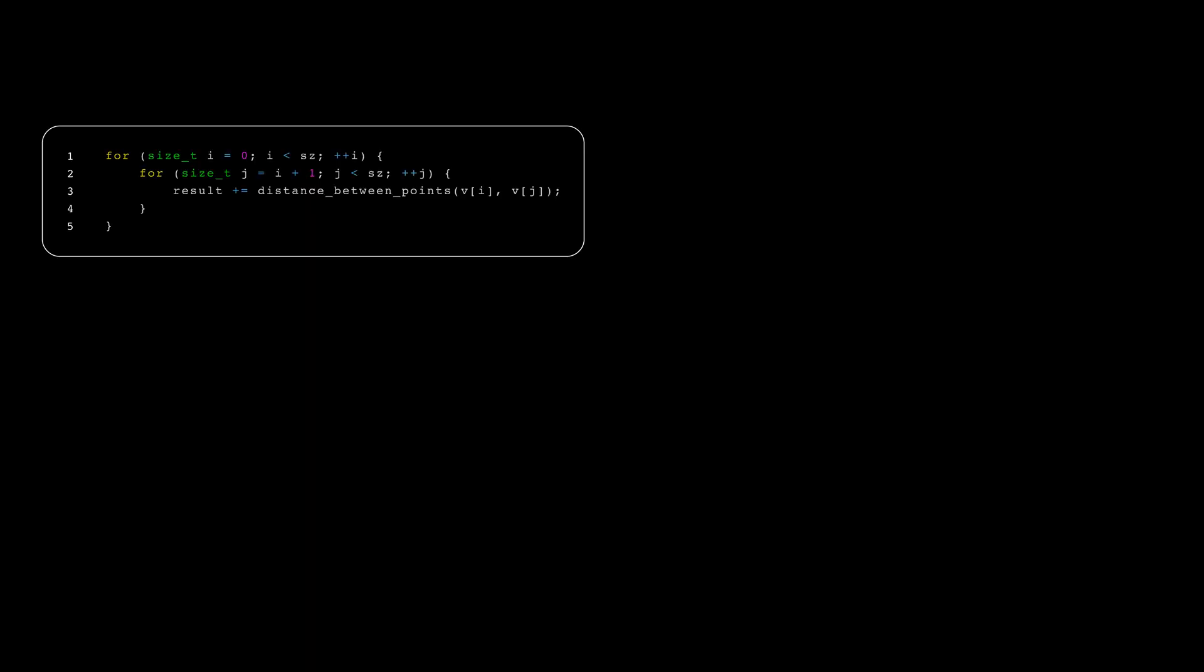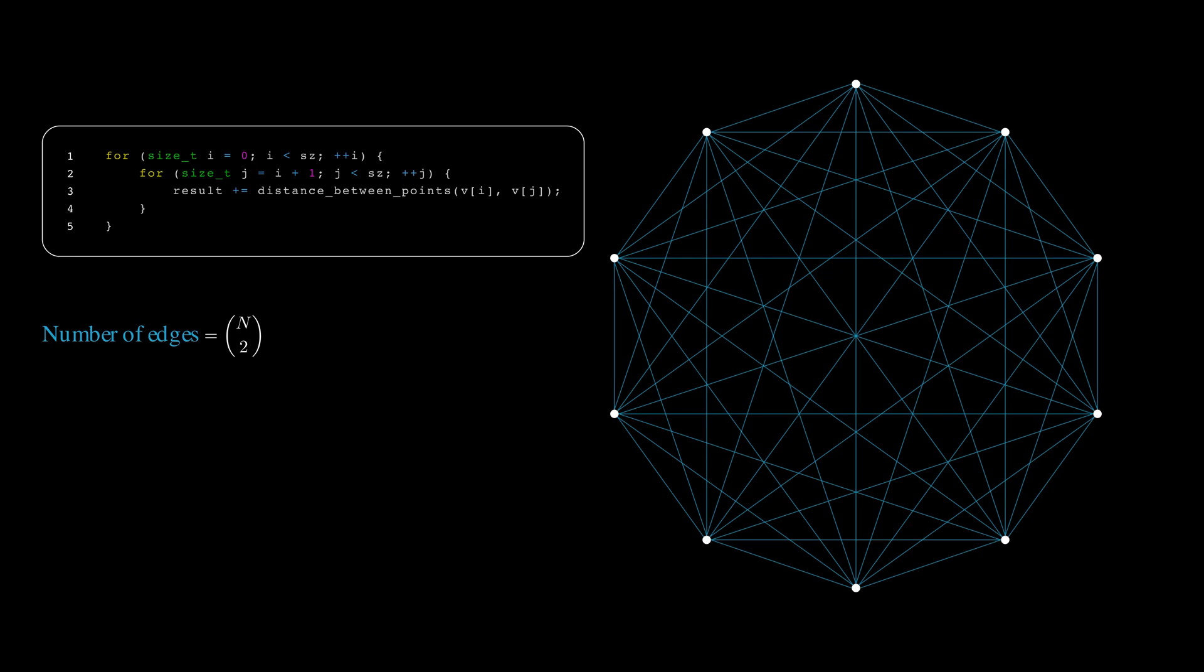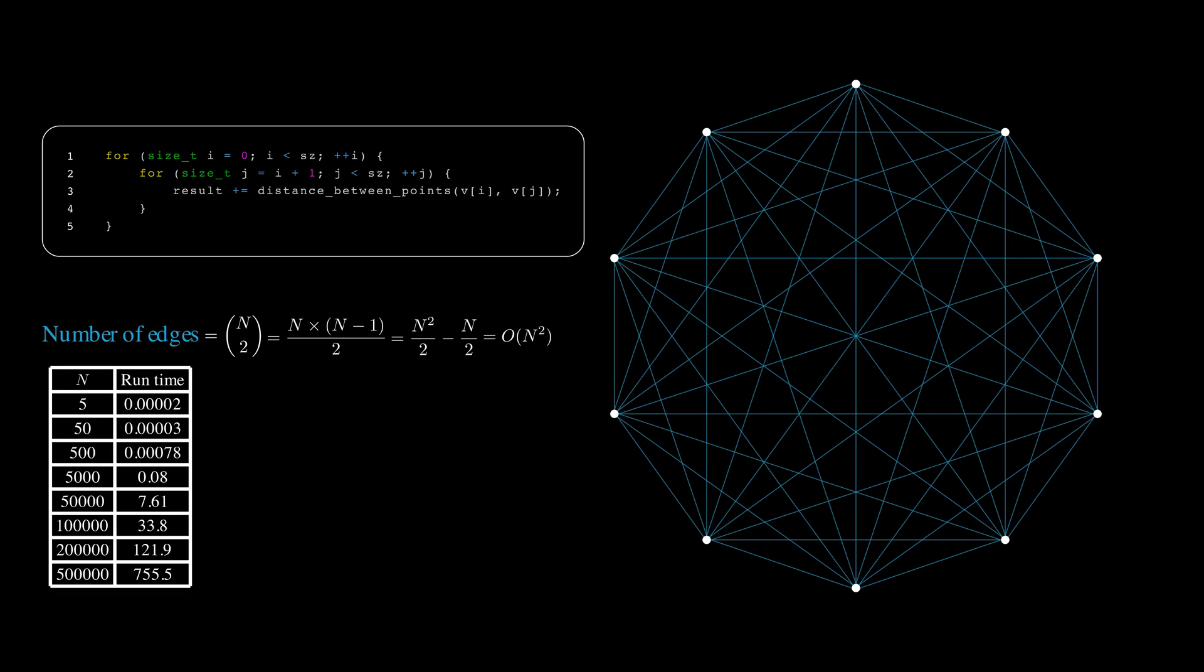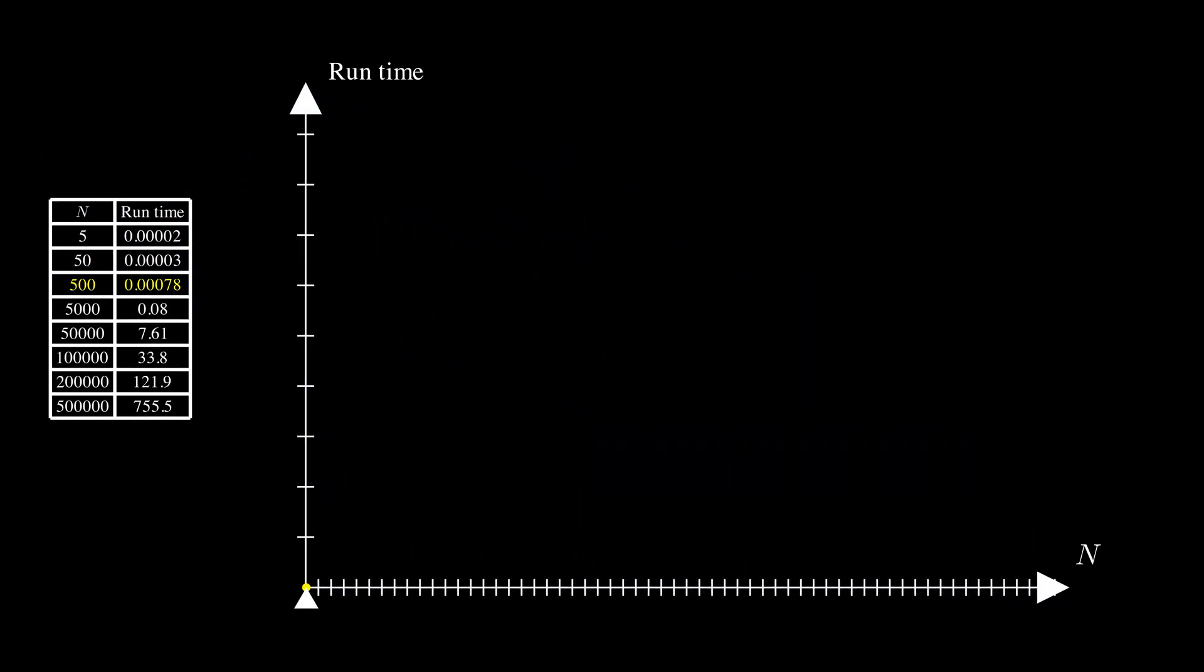It's quite easy to realize that the most time-consuming part of the code is this double loop. In it, we iterate over all n segments between our points. There are n choose 2 such segments, which equals n times (n-1) divided by 2. This can be represented as big O of n squared in terms of asymptotic growth. This means the number of operations grows proportionally to the square of n. It's clear these points are well approximated by a parabola, around time equals n squared with a certain coefficient.